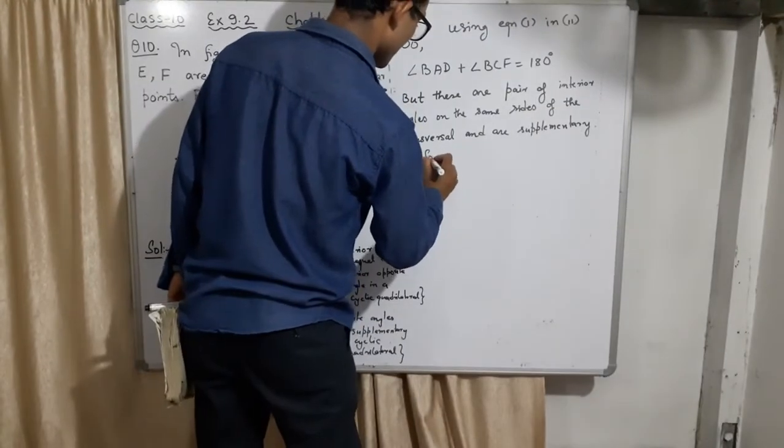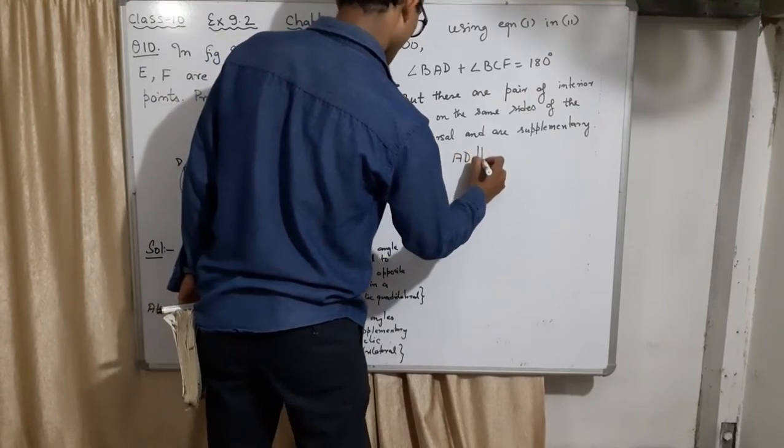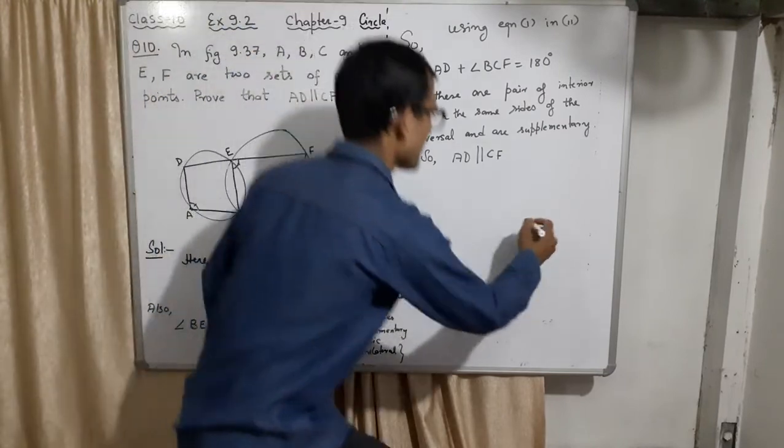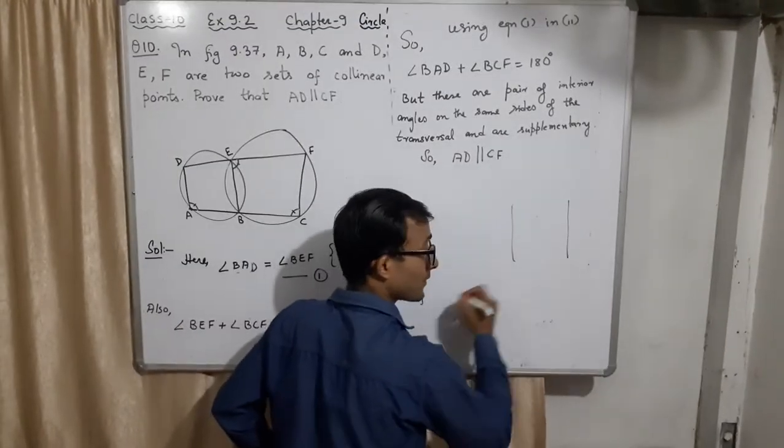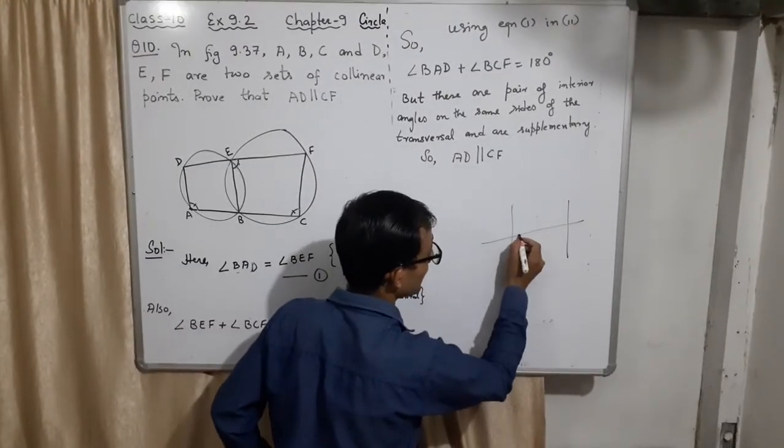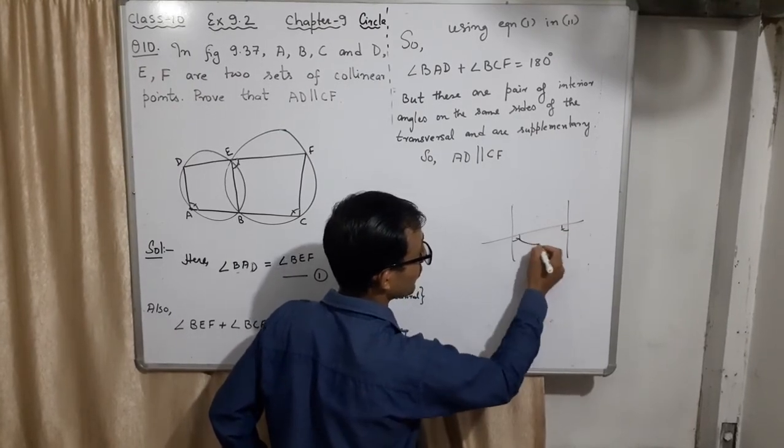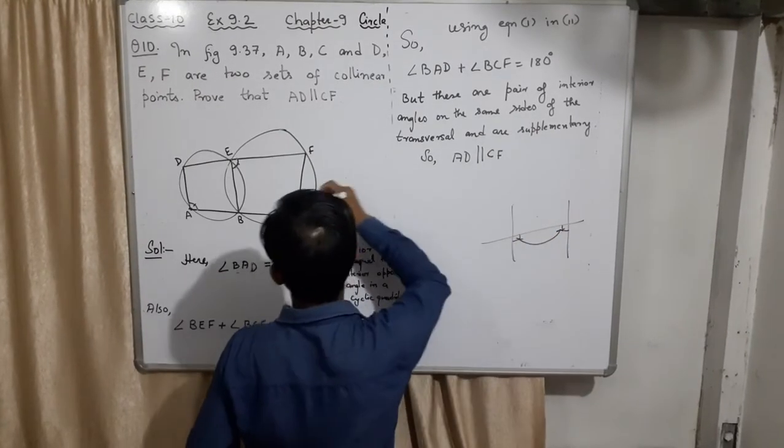So AD became parallel to CF. What is the meaning of this? It means that if there are two parallel lines and a transversal, these two lines, those two angles, they are always 180 degrees. And that is what happens.